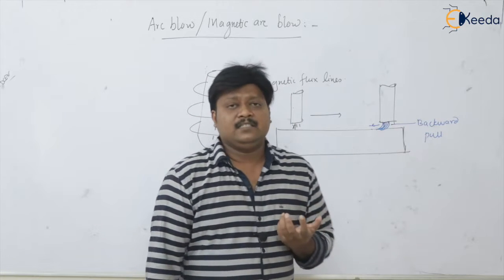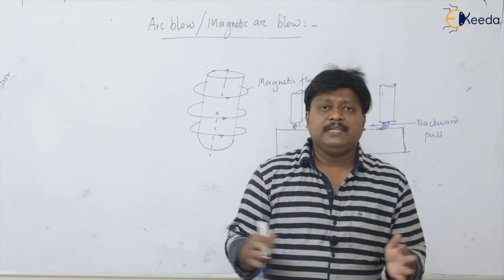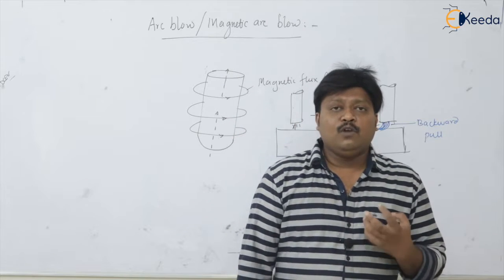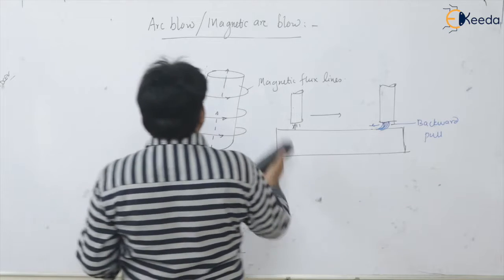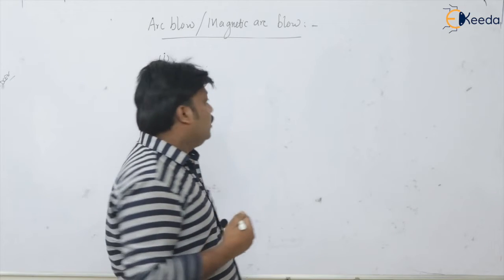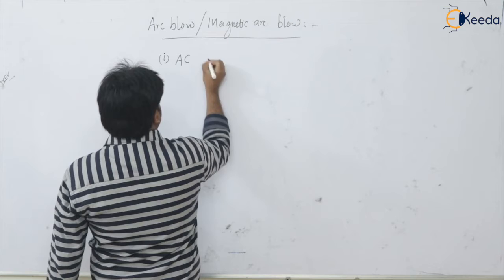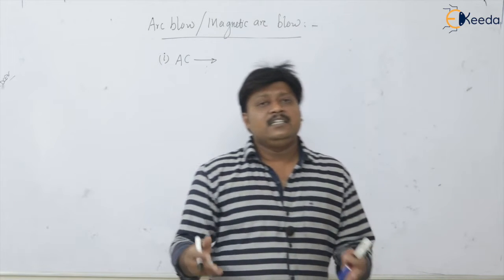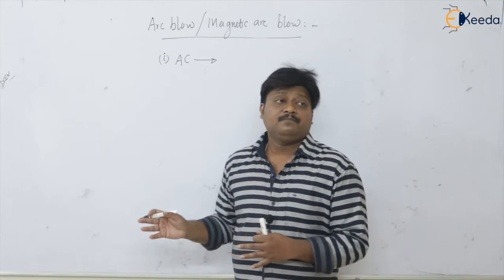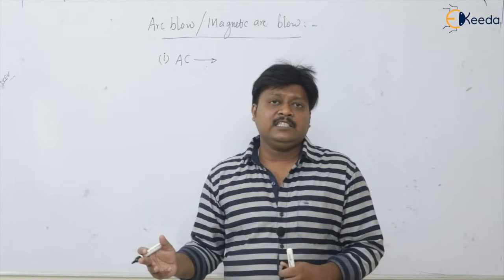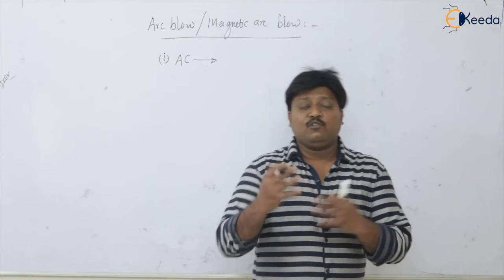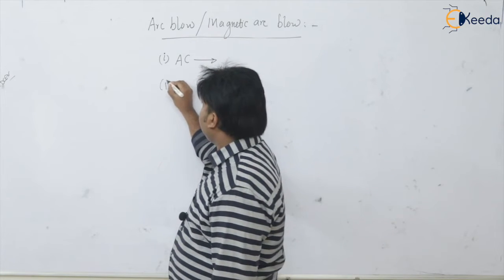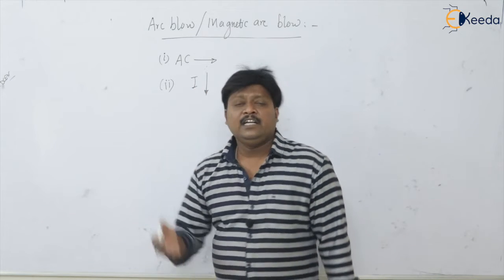We cannot eliminate arc blow completely, but we can reduce its severity. Here are the remedies. First, you can switch from DC to AC, because in AC there is constantly changing polarity, so the magnetic field effect is totally nullified and the arc blow is reduced or eliminated.